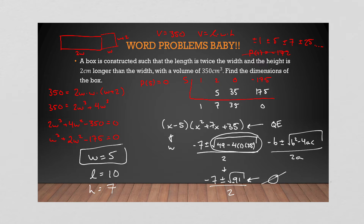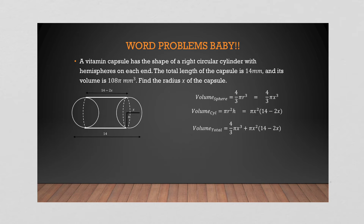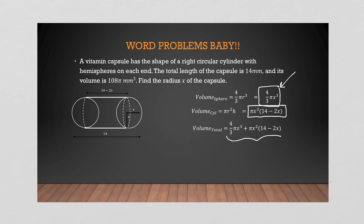Another question: we have a little vitamin capsule — a cylinder with two half-spheres on the tips, your basic vitamin capsule shape. On the right I've given you the equations for volume of various shapes. The volume of a sphere — we have two halves, which multiplied together still gives the volume of one full sphere. Then there's the volume of the cylinder, and the volume of the whole thing.